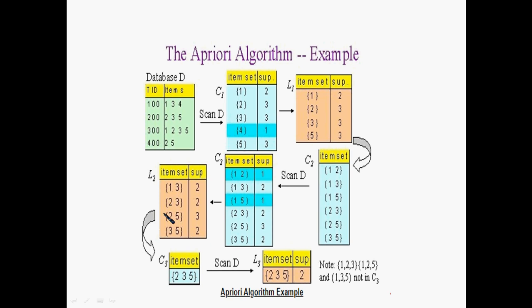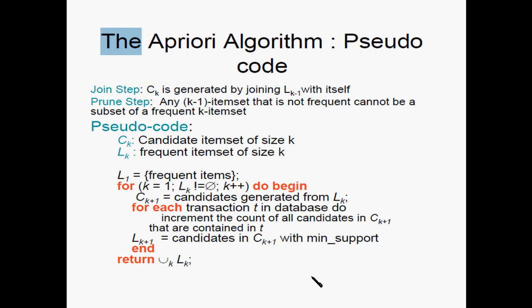From L2, which contains {1,3}, {2,3}, {2,5}, and {3,5}, we perform the join operation and then pruning to generate C3. We join {1,3} and {2,3}, producing {1,2,3}. We join {2,3} and {2,5}, producing {2,3,5}. We join {1,3} and {3,5}, producing {1,3,5}. We set up the item set and check minimum criteria for each candidate in C3.